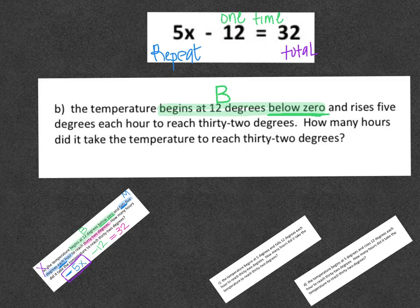Then when I keep reading, it says rises 5 degrees each hour. Rises is going to be positive. And it says each hour. That means the 5 is going to take the place of M.